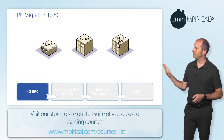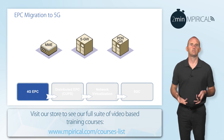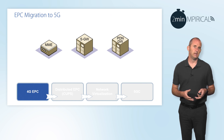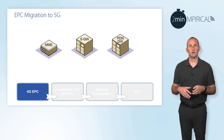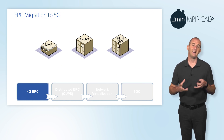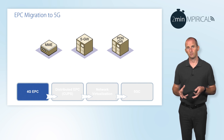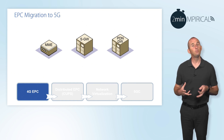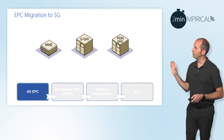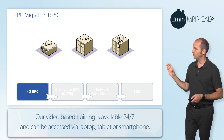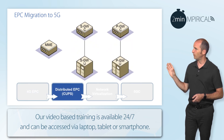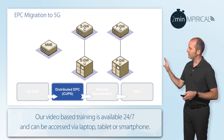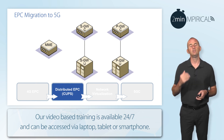We start with 4G EPC — traditional nodes like the mobility management entity, the serving gateway, and the PDN gateway. These might be traditional hardware-based platforms. The first step would be to deploy control and user plane separation of EPC nodes, largely centred around the S gateway and the P gateway, so they are separated into their control and user plane elements.